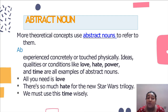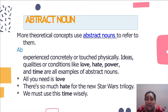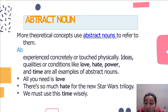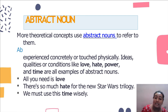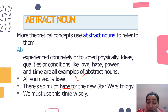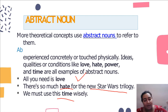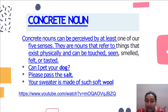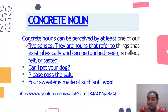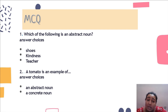Now let's move further to abstract nouns. Abstract nouns cannot be experienced concretely or touched physically — they are ideas, emotions, qualities, and conditions. Examples: hate, love, power, and time are all abstract nouns. 'All we need is love' — love is an abstract noun. 'There is so much hate for the new Star Wars trilogy.' Concrete nouns are nouns that can be perceived by at least one of our five senses: eyes, ears, nose, tongue, and touch.